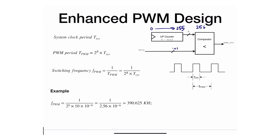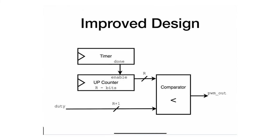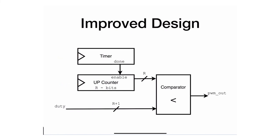The solution is straightforward — we've seen it before. We add a prescaler timer that generates small done ticks. The timer operates at 100 MHz, and instead of the counter incrementing every clock cycle, it only increments when the timer's done tick fires. This allows the timer to control when the counter ticks.